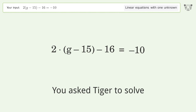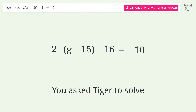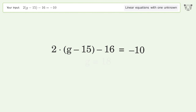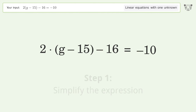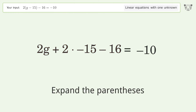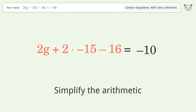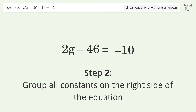Tiger was asked to solve this — it deals with linear equations with one unknown. The final result is g equals 18. Let's solve it step by step: simplify the expression, expand the parentheses, simplify the arithmetic, and group all constants on the right side of the equation.